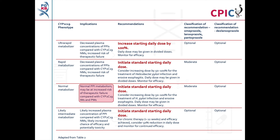Patients with a CYP2C19 normal metabolizer phenotype will have normal PPI metabolism; however, they may be at an increased risk of therapeutic failure compared to intermediate or poor metabolizers. These patients can be given the standard starting dose. A dose increase of 50–100% can be considered when treating Helicobacter pylori infection or erosive esophagitis.